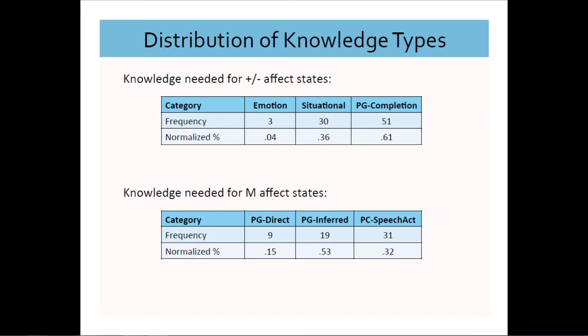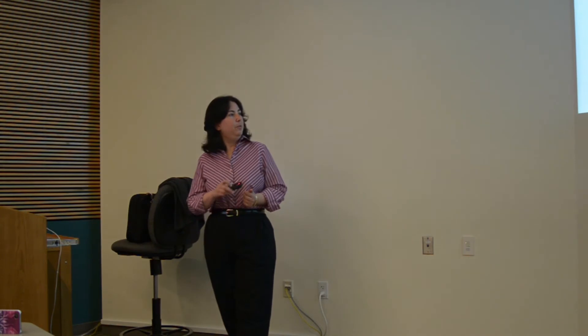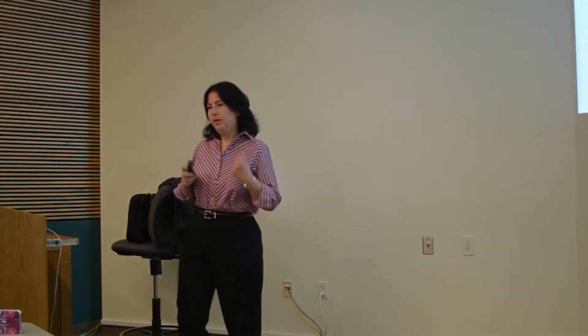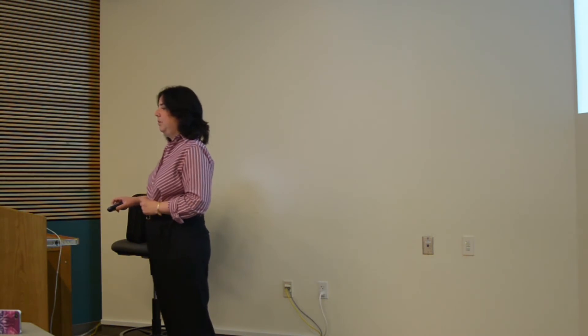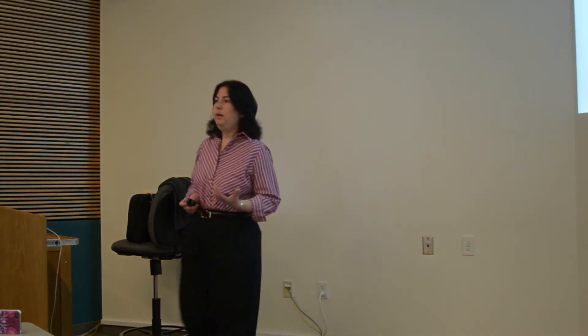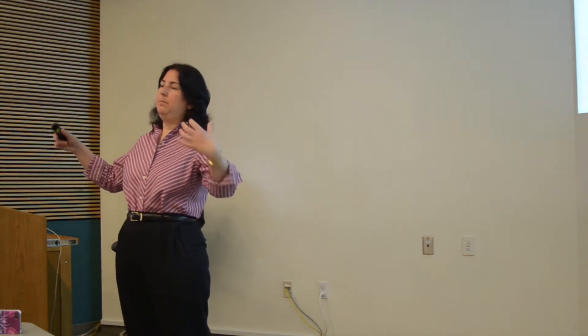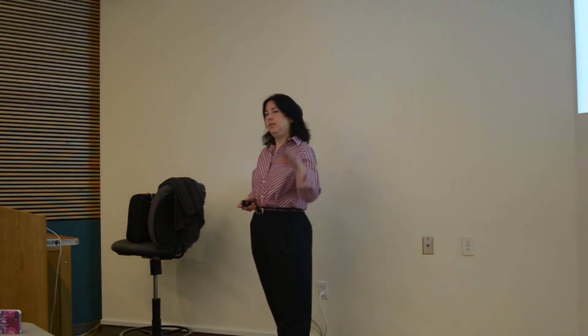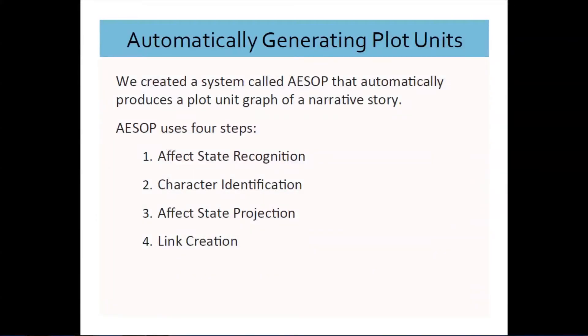Despite how challenging this is, we did go ahead and build a system. One of our goals was to decompose the problem into subtasks, because generating a big plot unit graph is a daunting task. We broke it down into four steps: affect state recognition, character identification, affect state projection, and finally creating the links.